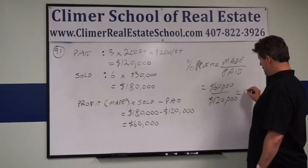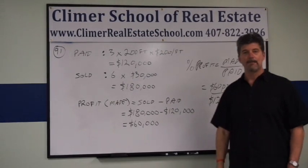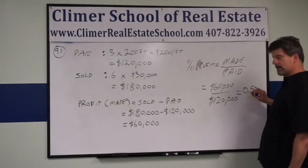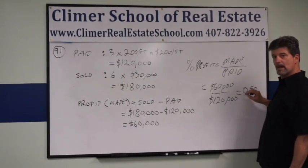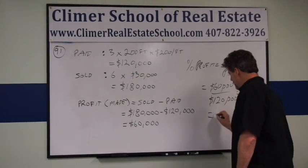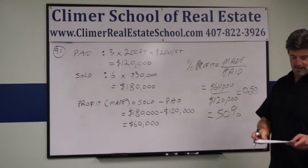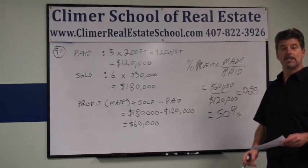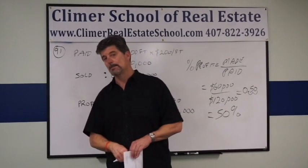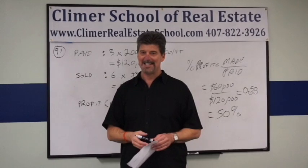Put this into a calculator: top number divide bottom number equals — $60,000 divided by $120,000 equals 0.5. To turn 0.5 into a percentage, put your pen or pencil on the decimal point and move it two places to the right. The percentage profit is 50%. That is how you do a percentage profit problem on the free practice exam. Good luck on the state exam!